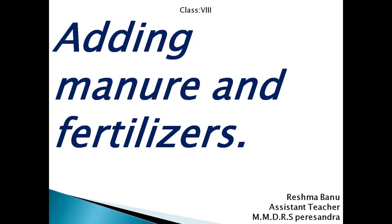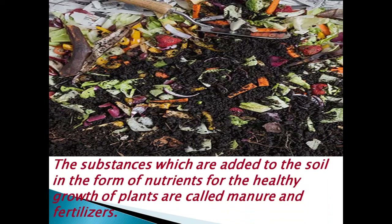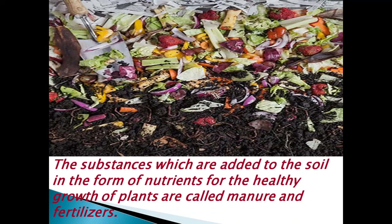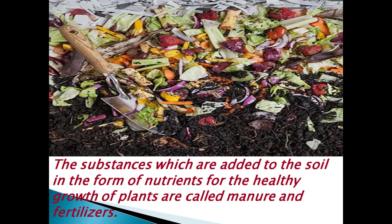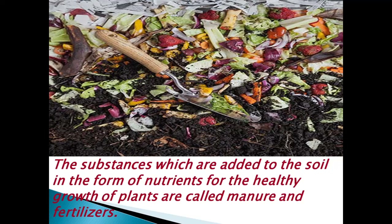In the previous video class we learned about the first two agricultural practices: preparation of soil and sowing. In today's class, let us learn about adding manure and fertilizer, the third important step under agricultural practice. The substances which are added to the soil in the form of nutrients for the healthy growth of plants are called manure and fertilizers.